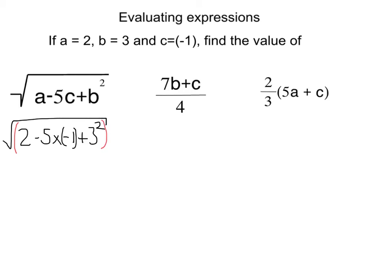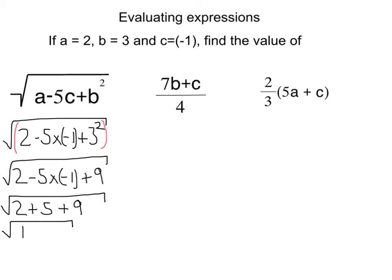Now, I must do everything underneath the square root first, because there is like an imaginary bracket there. So in this square root, I'm going to do my powers first. I'm going to get 2 minus 5 times minus 1, plus 9. Do my multiplying: 2 minus 5 times minus 1 is plus 5, plus 9. Do all of this adding, and I get root 16, and the square root of 16 is 4.